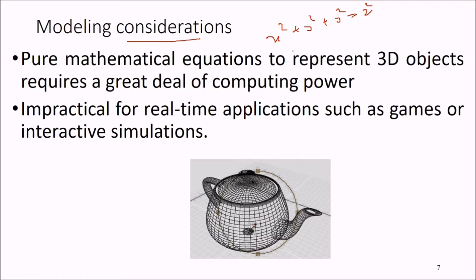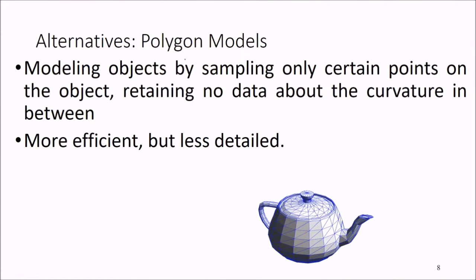The equations we use will require increased computing power, making it impractical for real-time applications such as games or interactive simulations. So an alternative is polygon models — modeling objects by sampling only certain points on the object, making triangles and polygons, retaining no data about the curvature. This is more efficient but less detailed, making things less computationally expensive.